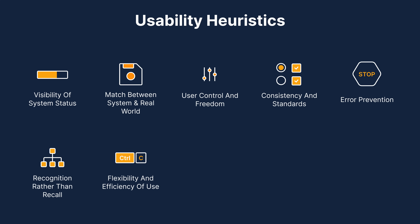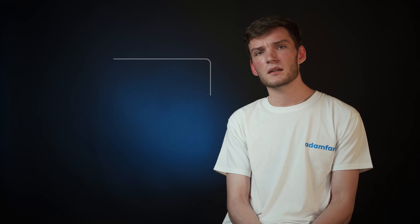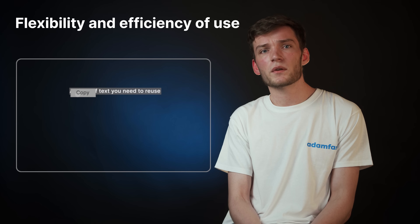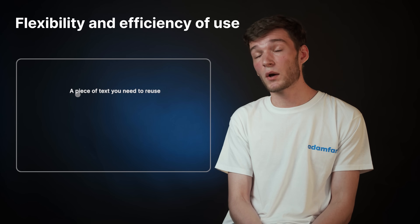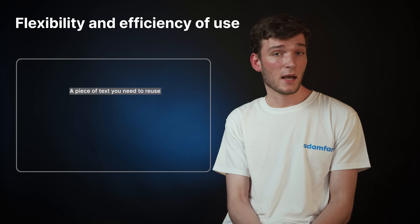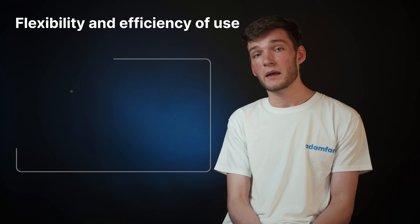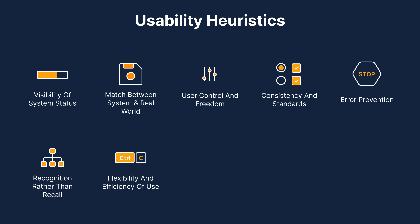Heuristic number seven is flexibility and efficiency of use — both new and experienced users should be able to efficiently use the system. You may have walked or driven from home to work thousands of times and can take the shortest route easily, but that doesn't mean there's no need for direction signs for those new to the neighborhood. A good interface should appeal to both user types. Heuristic number eight is aesthetic and minimalistic design, meaning you should declutter as much as possible, because less is more.